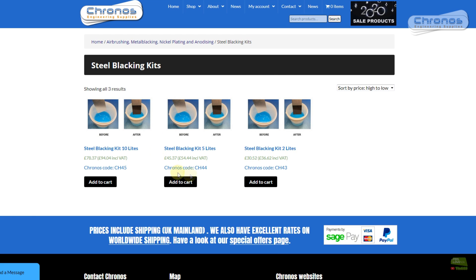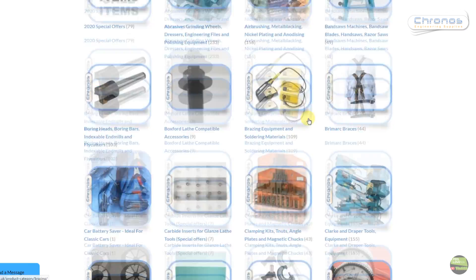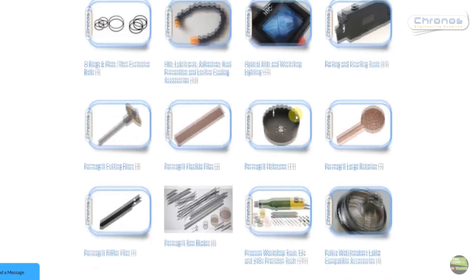They sell this blacking solution in three different packaging. They also sell other kits from anodizing aluminum, zinc plating, nickel plating and so on. And of course they've got lots of tools for lathe, mills and other stuff.